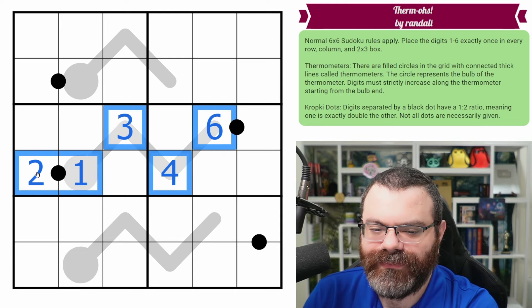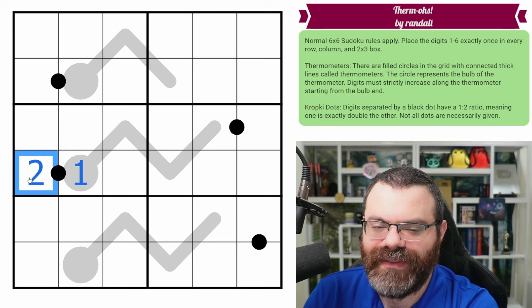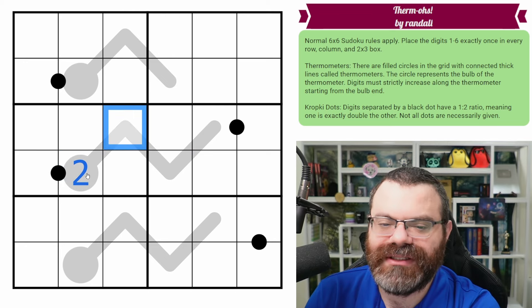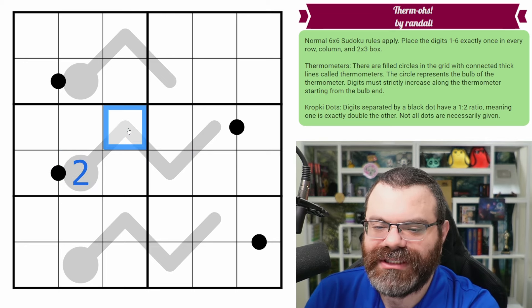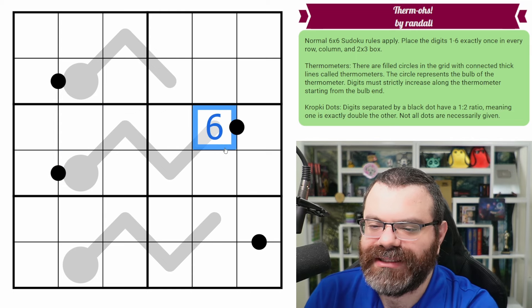So basically, the one and the two are used up in this cell because it's either a one, and that uses up the two next to it, which prevents this from being two, or it's a two, which still prevents that from being two. Either way, that forces this to be minimum three, four. And either way, that means this can't be five. So it has to be six, we get our first digit, that's a six. And that does place a three here.